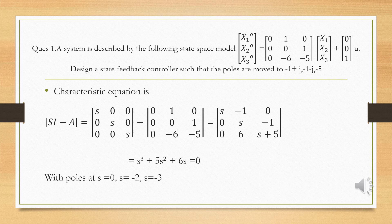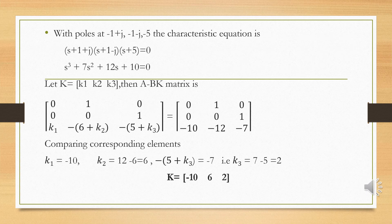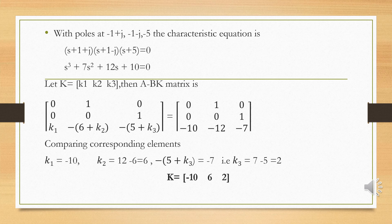The desired characteristic equation based on the desired pole locations minus 1 plus or minus j and minus 5 gives: s cubed plus 7s squared plus 12s plus 10 equals zero. We define K as [k1, k2, k3] and compute the matrix A minus BK, then find its characteristic equation.